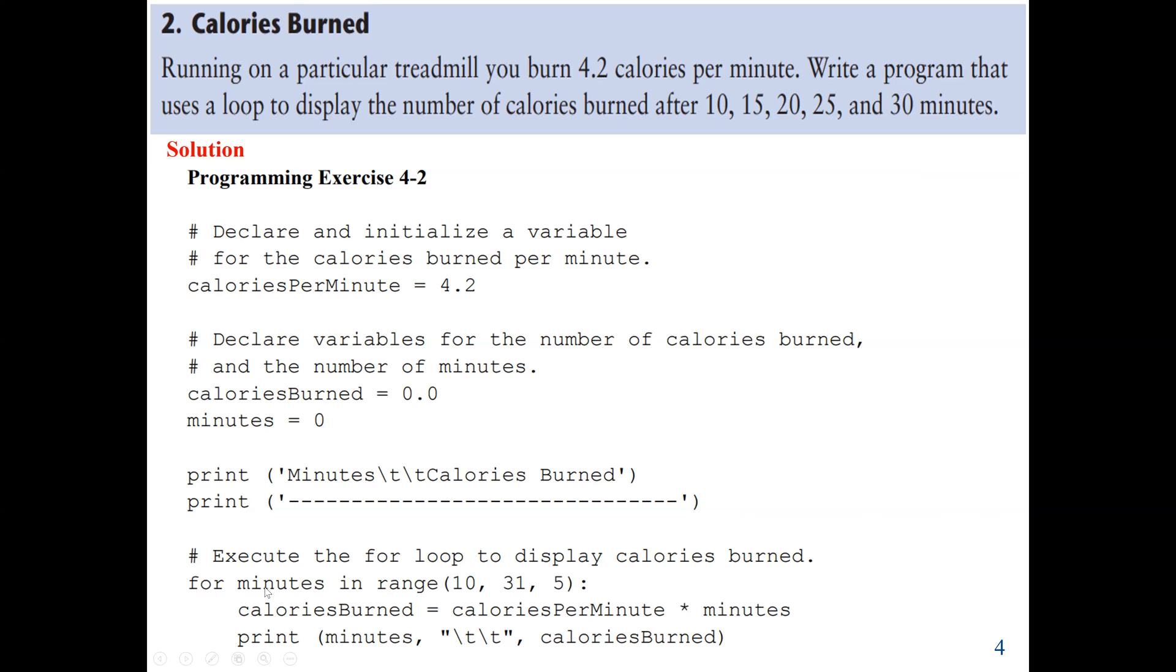So here we say for minutes in range 10 to 31 and 5. The reason why we are using these three values, 10 minutes, we are starting from 10 minutes, as we can see in our question. And also we end at 30. But as we said, in the range, if it's 5, it will go from 0 to 4. If it's 30, then up to 29. So that's why we are using 31.